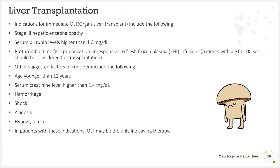In very severe cases, liver transplantation may be the only option. Indications for immediate organ liver transplant include stage 3 hepatic encephalopathy, serum bilirubin levels higher than 4.6 mg/dL, and prothrombin time prolongation unresponsive to fresh frozen plasma infusion — patients with PT greater than 100 seconds should be considered for transplantation. Other factors to consider include age younger than 12 years, serum creatinine higher than 1.4 mg/dL, hemorrhage, shock, acidosis, and hypoglycemia. In patients with these indications, orthotopic liver transplantation (OLT) may be the only life-saving therapy.